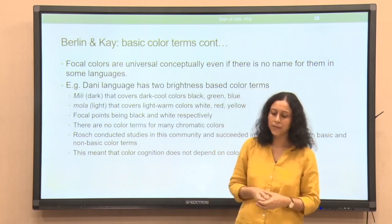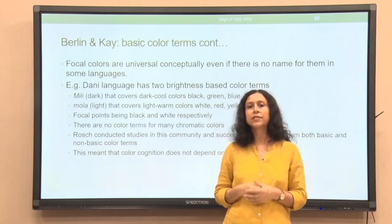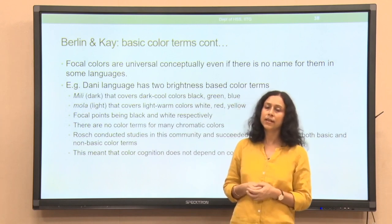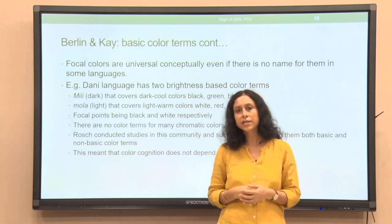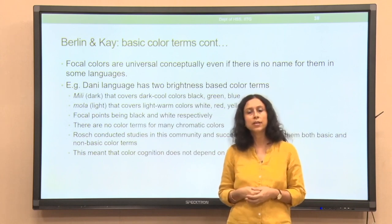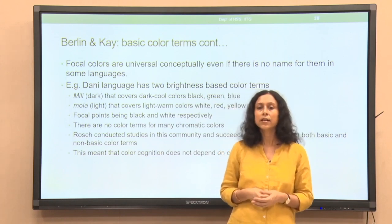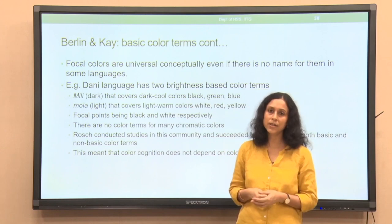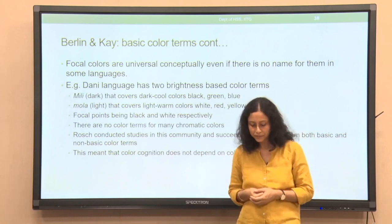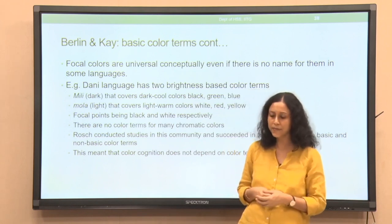All other languages fall in between these two extreme points on the spectrum. Now, the question is: if a language does not have names for chromatic colors, does it mean they will have only one particular focal color? In the case of Dani, with terms 'mola' and 'mili,' Rosch has shown that even when asking different speakers about the focal color, there are differences across speakers. Through these findings, we see that the theory of prototypicality holds in case of color terms.